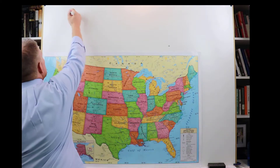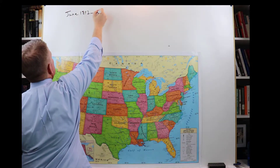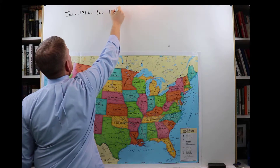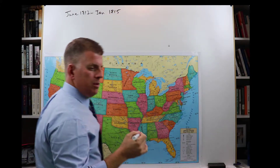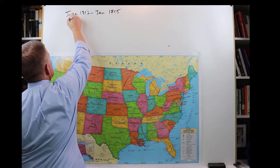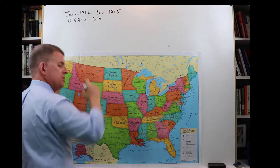The War of 1812 started in June of 1812 and it ended January 1815, so it was pretty short. It was between the U.S. versus Great Britain. Some historians have called the War of 1812 a continuation, or part two, of the Revolutionary War.